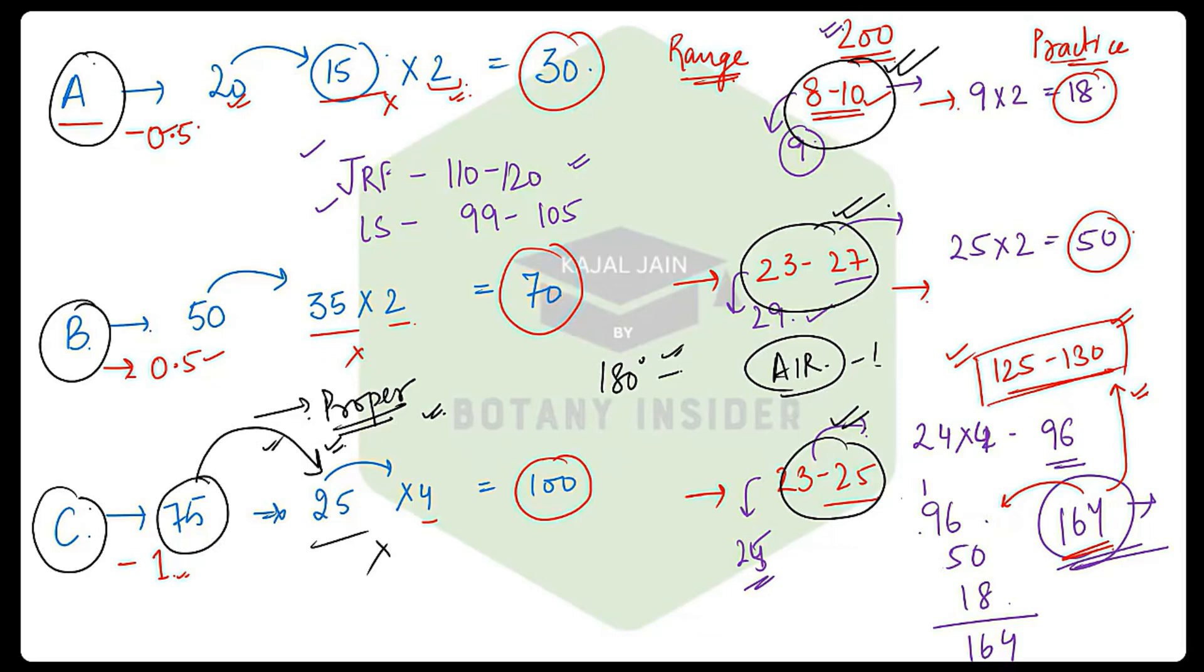But what is the additional thing that the AIR 1 or any particular rank student has done? Those students who qualify have strategized their marking, strategized their 180 minutes to the best of their ability. This is about the complete range and what should be your strategy for the number of questions. I hope this is clear to all.